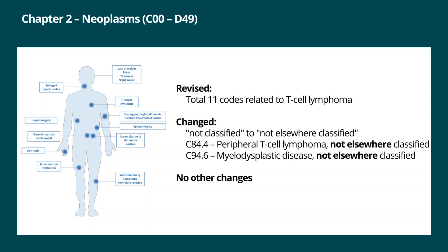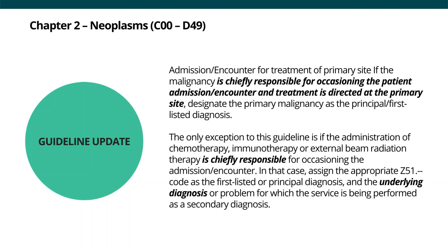For chapter two, neoplasms, a total of 11 codes were revised and the only changes are for code categories C84.4 and C94.6, where the word 'elsewhere' has been added to the code descriptions. There are no other code changes for chapter two. For the guidelines, if the malignancy is chiefly responsible for the patient's admission and treatment is directed at the primary site, code the primary site as the principal diagnosis. The exception is if the patient is admitted for chemotherapy, immunotherapy or external beam radiation; then the appropriate code from category Z51 should be the principal diagnosis, additionally coding any malignancy or complications.